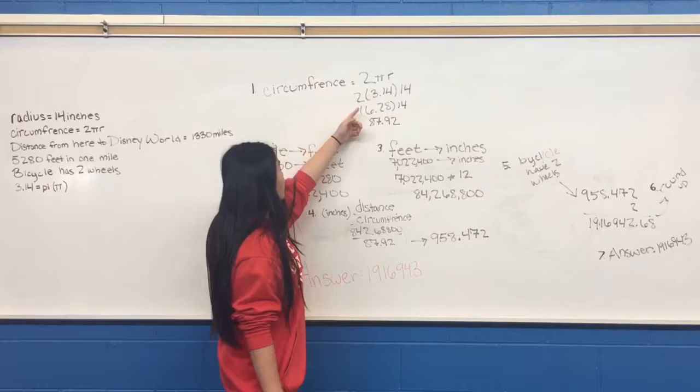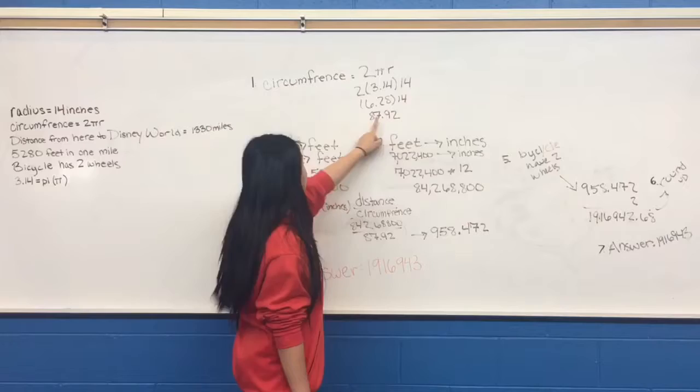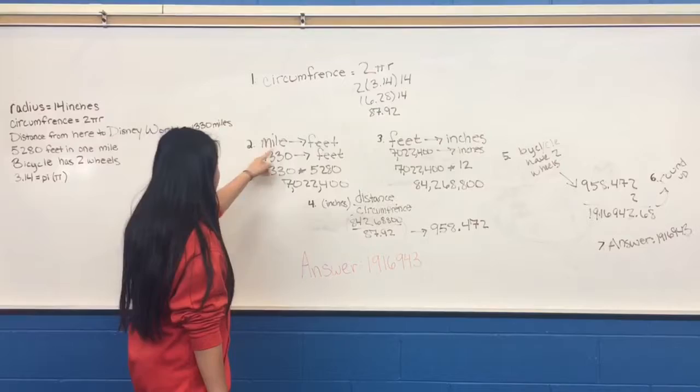So first, we did the circumference, which is 2πr, 2 times πr, plus 6 times πr. So if you multiply that by 14, you get 87.92.